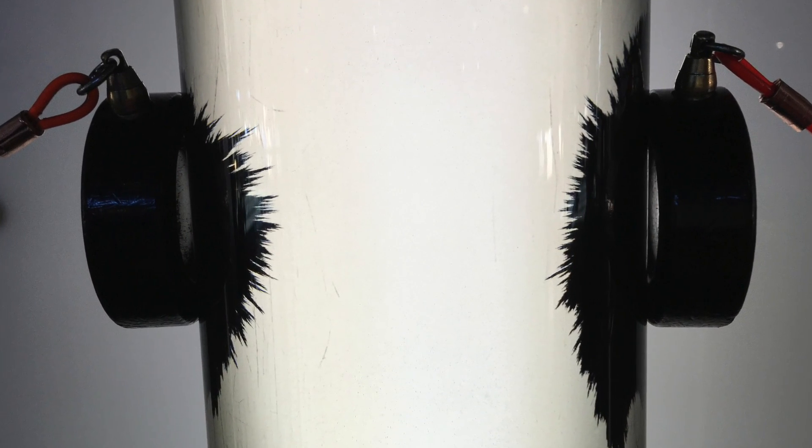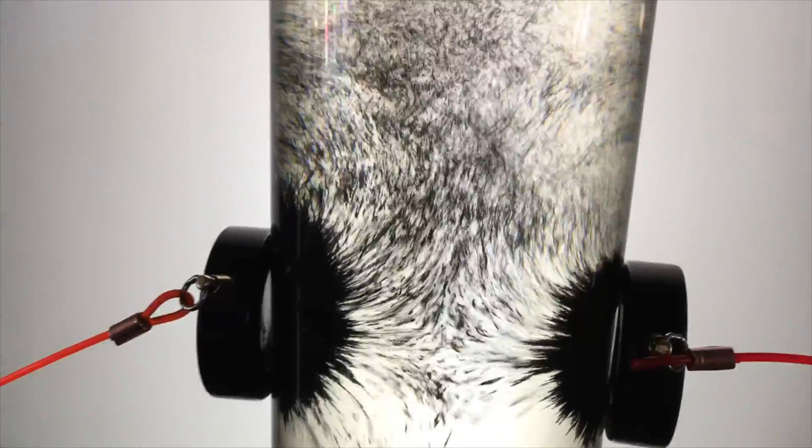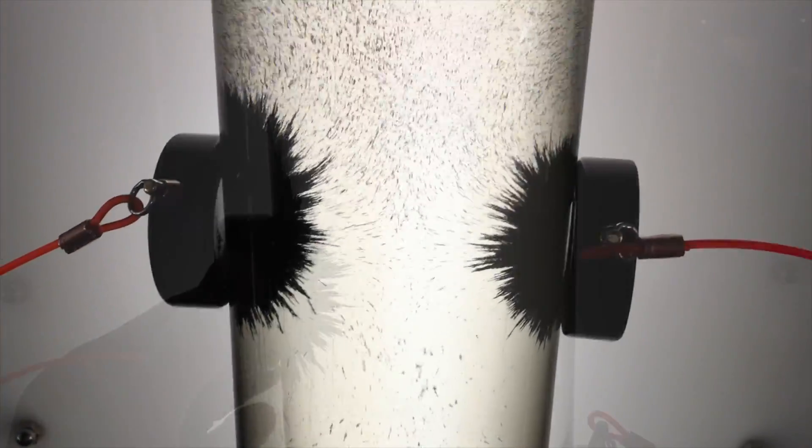When you place the magnets against the tube, the iron particles form interesting structures that almost make the magnets look like they are growing a beard.